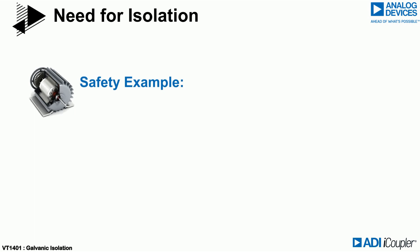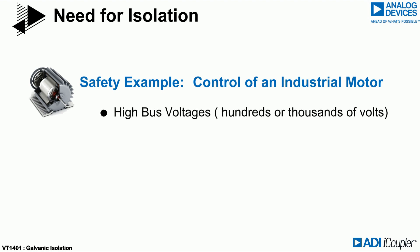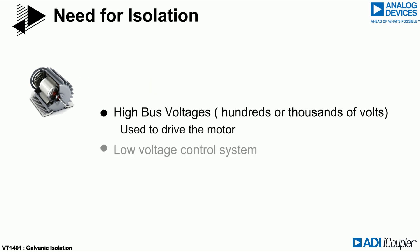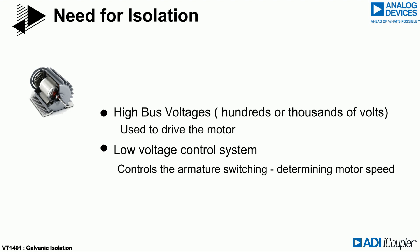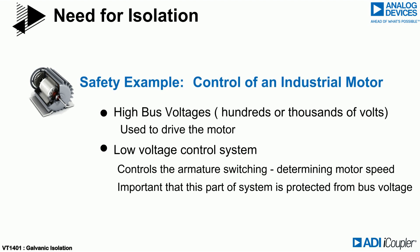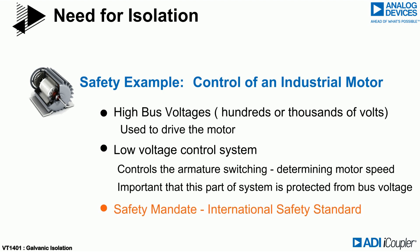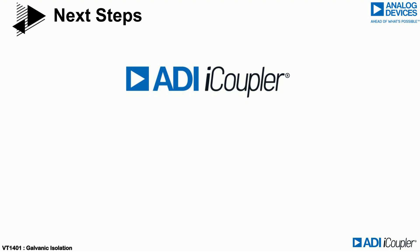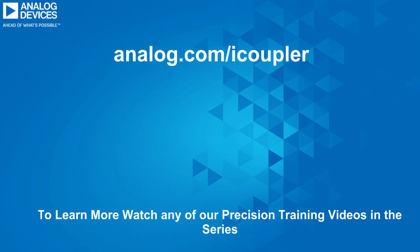An example of a safety requirement would be in the control of an industrial motor. Here, very high bus voltages — hundreds or even thousands of volts — are often used to drive these motors. A low-voltage control system is generally used to control the armature switching to determine the motor speed, and this part of the system must be protected from the bus voltages. Human operators often interface with the control electronics, creating a need for safety. An international safety standard sets the requirements for this type of application. Analog Devices has many digital isolators that provide trusted safety and data integrity. To learn more, please watch the next in our precision digital isolation video training series — click on the link below or visit analog.com/icoupler.